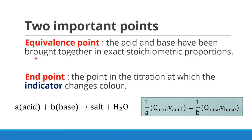Another important point in titration is the end point. The end point is the end of the titration where you stop adding the titrant into the sample. This is the point where your indicator changes color. If you choose a good indicator, as said earlier, these two points should be the same or close. If you choose the wrong indicator, the endpoint may not be the equivalence point.